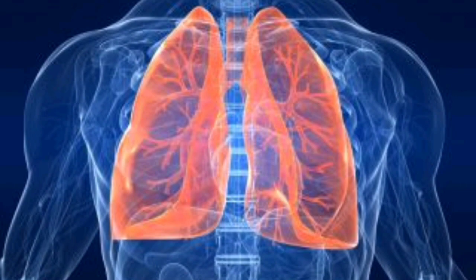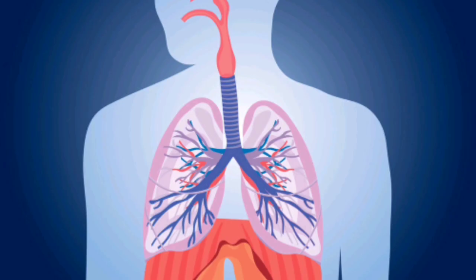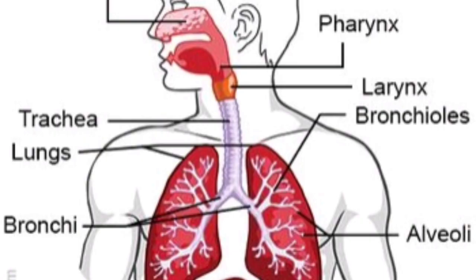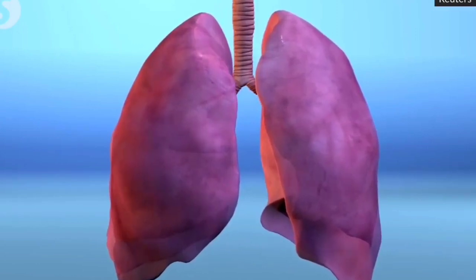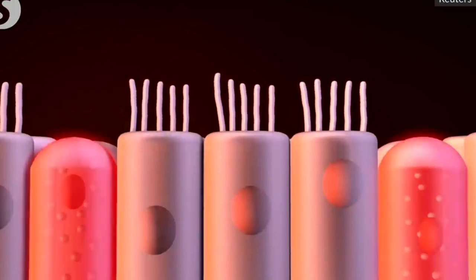Our different organs have different types of cells. The cells present in our brain are different from the cells present in our skin. The cells present in our respiratory tract are different from the cells present in our kidney and liver. This virus will attack only some specific types of cells — the cells present in our respiratory tract, especially the upper respiratory tract and the lung cells.